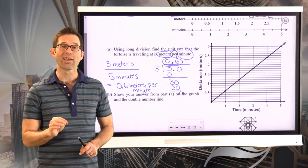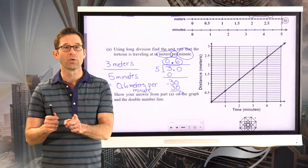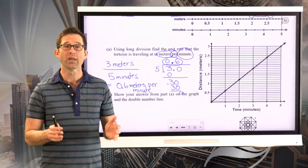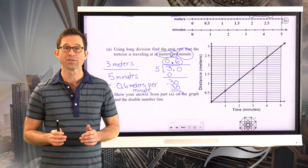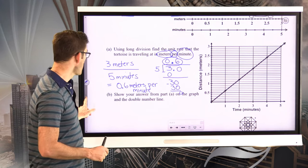And that makes sense, because if it was moving at exactly one meter per minute, then after five minutes, it would have gone five meters. But it hasn't gotten that far. It's only gotten three meters. Let's take a look at the second portion of this problem. Letter B, show your answer from part A, 0.6, on the graph and the double number line.